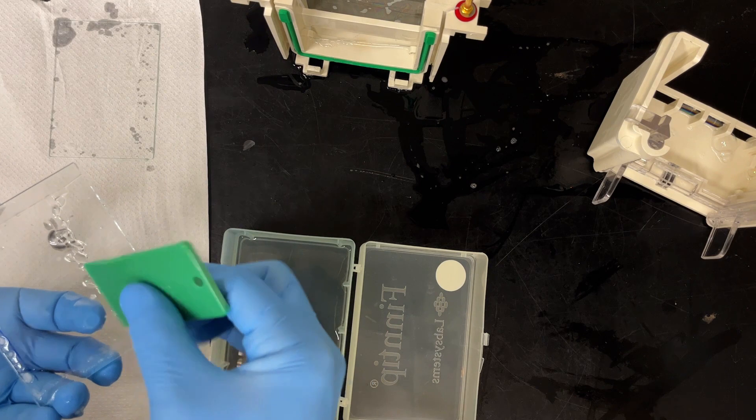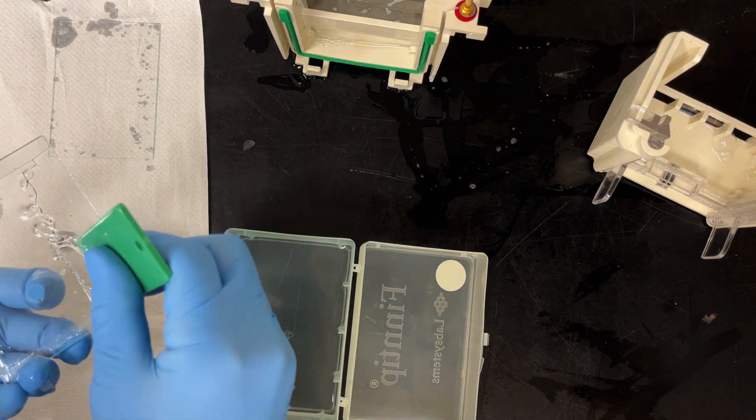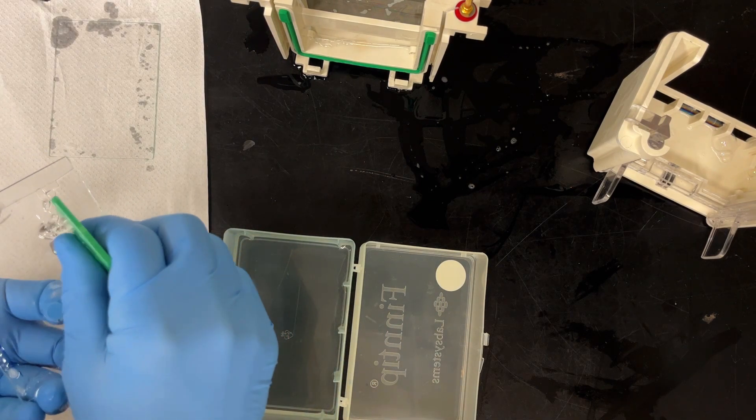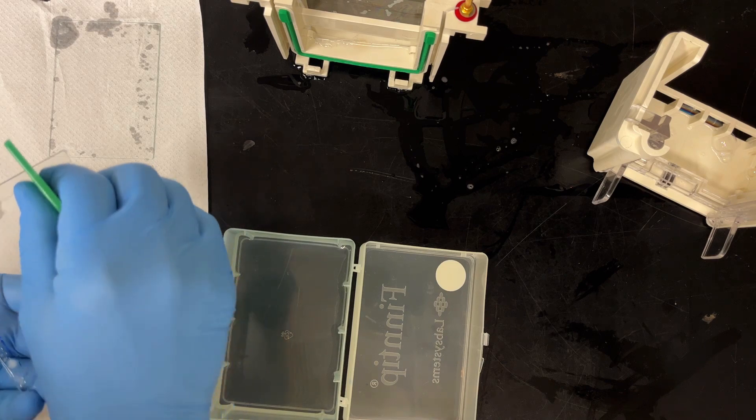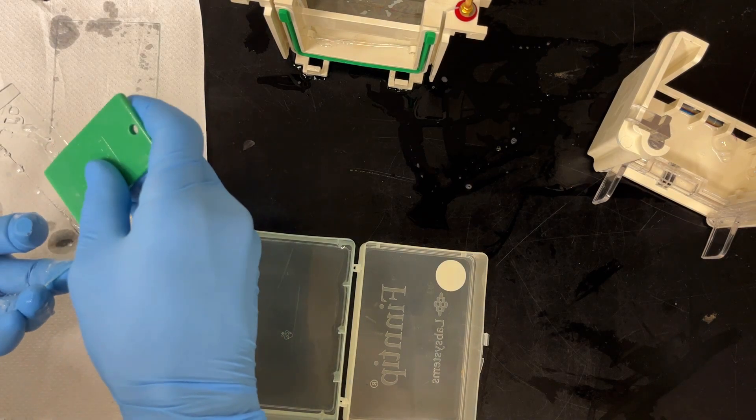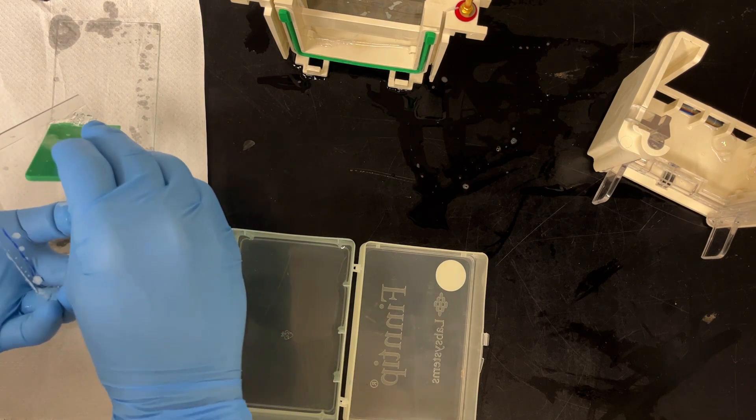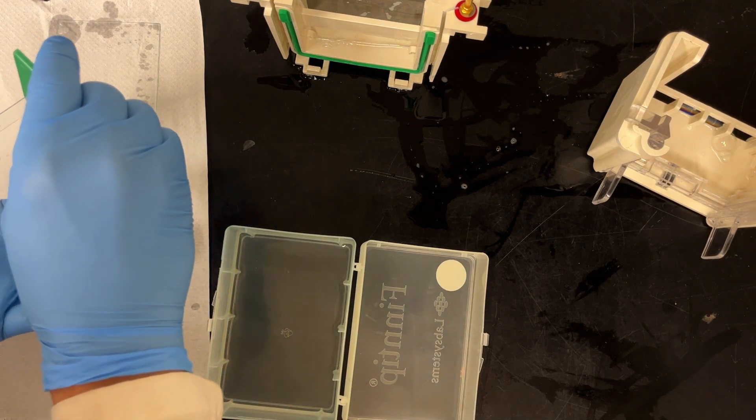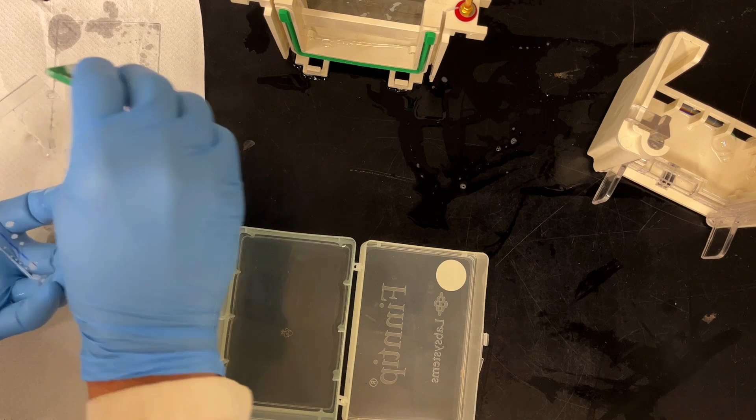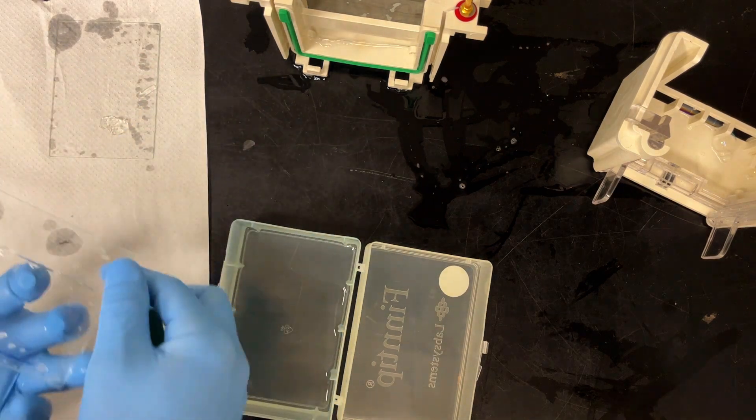And then I'm just going to peel, let the gel stick to the glass plate it wants to. In this case, it's the big plate. So once again, lane one is on the bottom there, or if I were looking at it on the right. Peel off the combs, the wells.